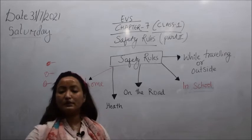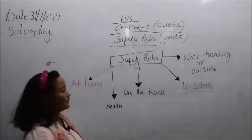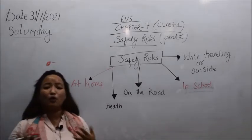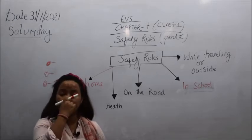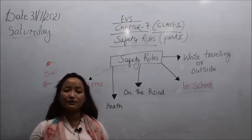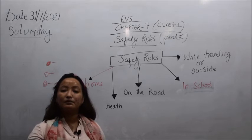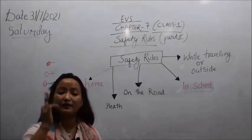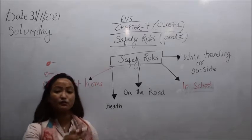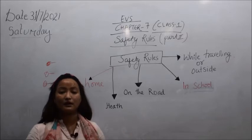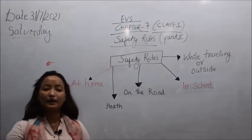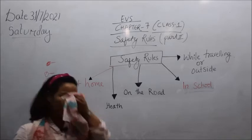The first category is: safety rules at home. At home — wherever you are living — what safety rules can you use? Safety means a condition of being safe, being protected from danger, damage, or accident. At home, what should we do? Can you tell me what you do at home — do you just sleep, sit, play, or only use mobile?